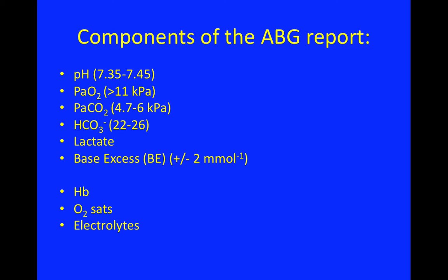The PaCO2: the body, through its metabolic processes, produces CO2, and that is ventilated out of the body. In situations where ventilation is impaired, CO2 can accumulate in the body and cause an acidosis. The converse is where patients hyperventilate for one reason or another, blowing off more CO2 and therefore causing an alkalosis.